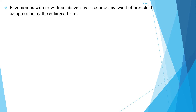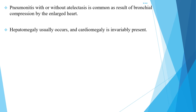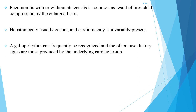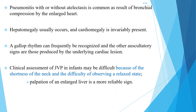Pneumonitis with or without atelectasis is common as a result of bronchial compression by the enlarged heart. Hepatomegaly usually occurs and cardiomegaly is invariably present. A gallop rhythm can frequently be recognized. Clinical assessment of JVP in infants might be difficult because of the shortness of the neck; in such infants, palpation of the enlarged liver is a more reliable sign.